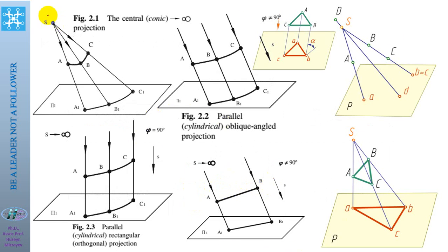In central projections, S is the projection center. The object A, B, C is a co-linear projected object in space, and all projection rays start from this center of projections and pass through the points, intersecting the projection plane. The projections on the projection plane give us points: C1 is the projection of point C, P1 for point P, and E1 for the projection of B.